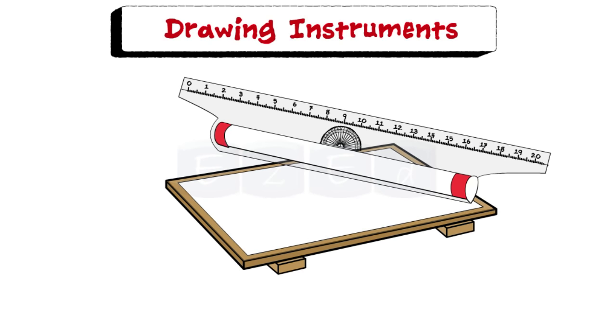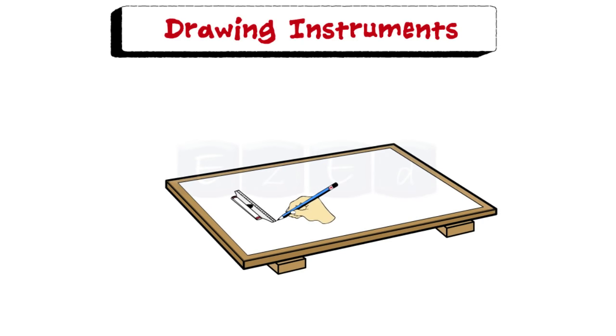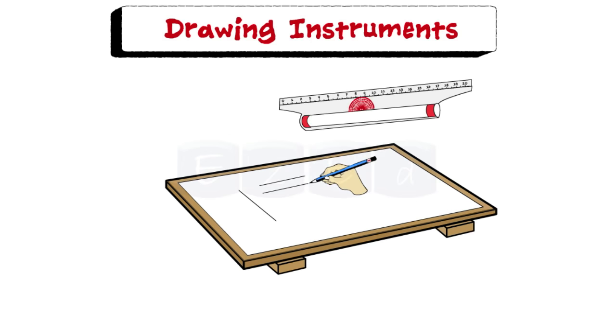Next is a roller scale. It has a roller in it. It is used for drawing vertical lines, horizontal lines, parallel lines, angles, and circles.